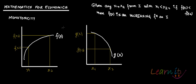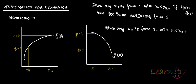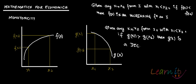The other definition is for the decreasing function: given any x1, x2 from interval I, with x1 less than x2, if g(x1) is greater than g(x2), then g(x) is a decreasing function on I. These are the two formal definitions for increasing and decreasing functions.